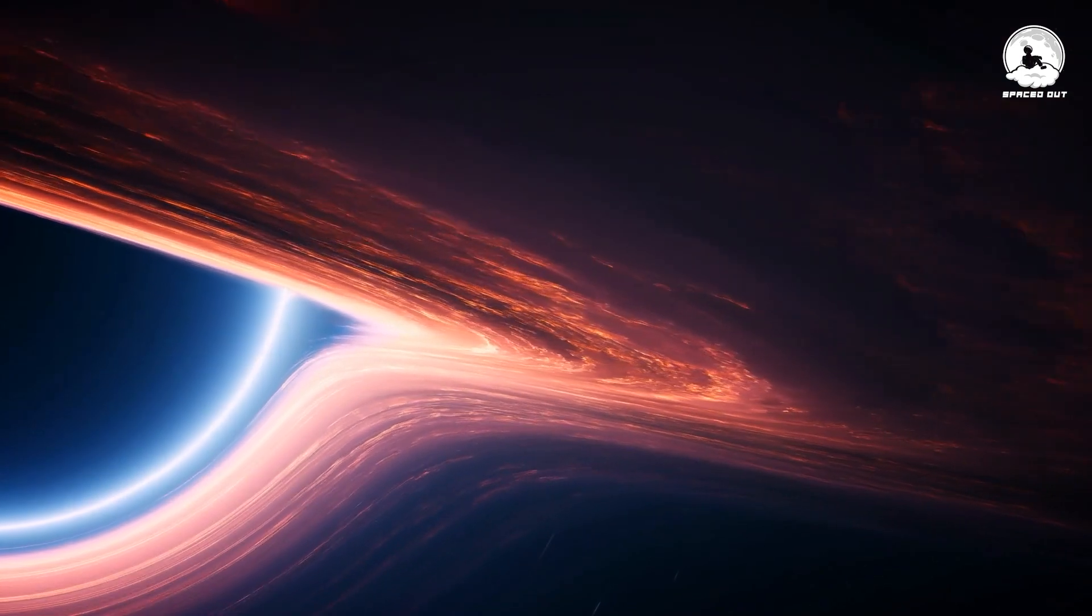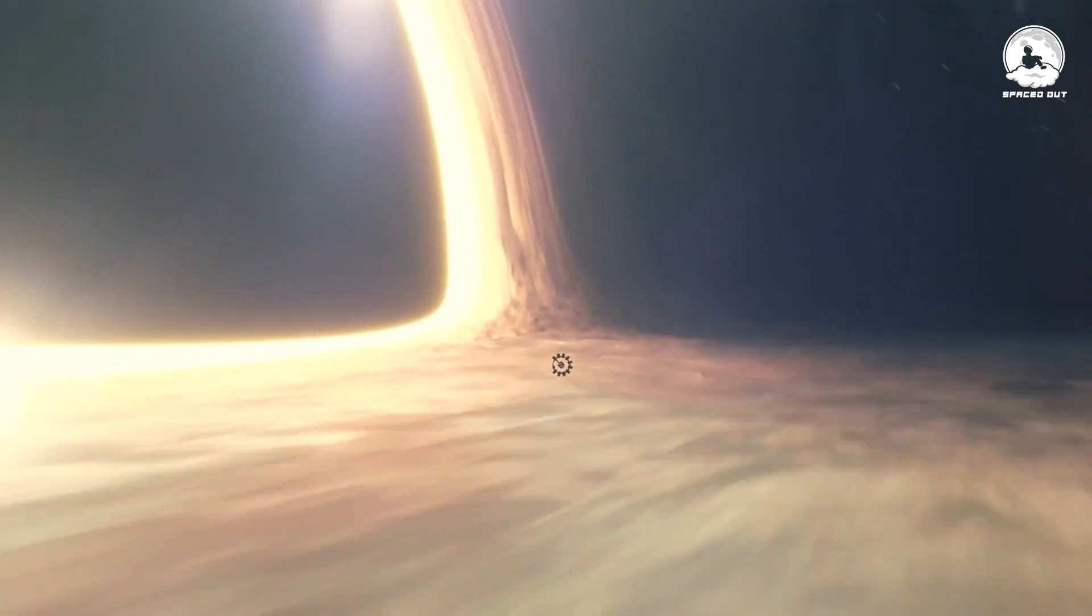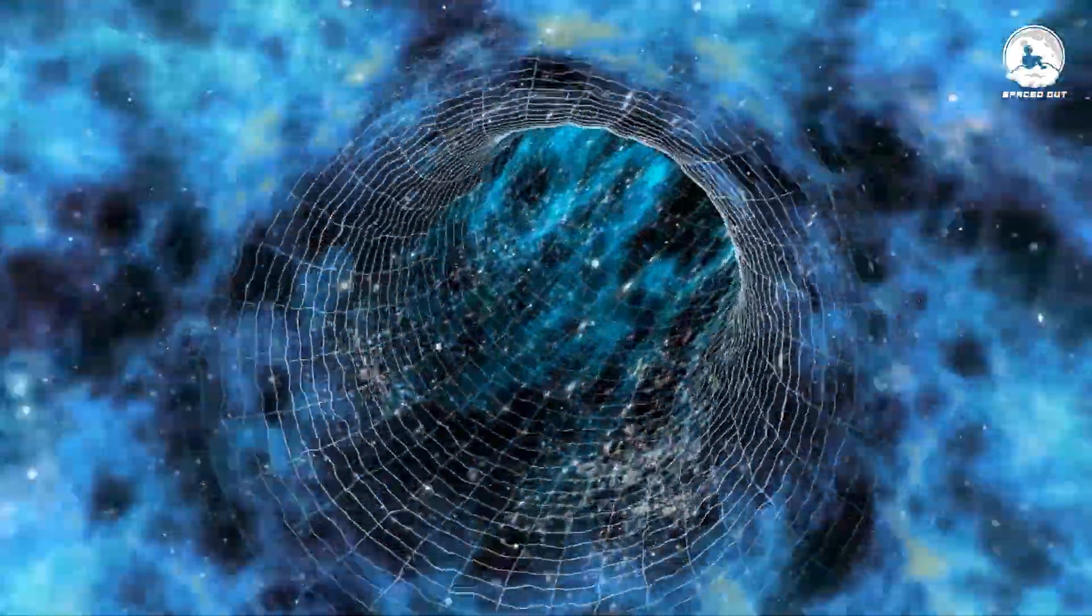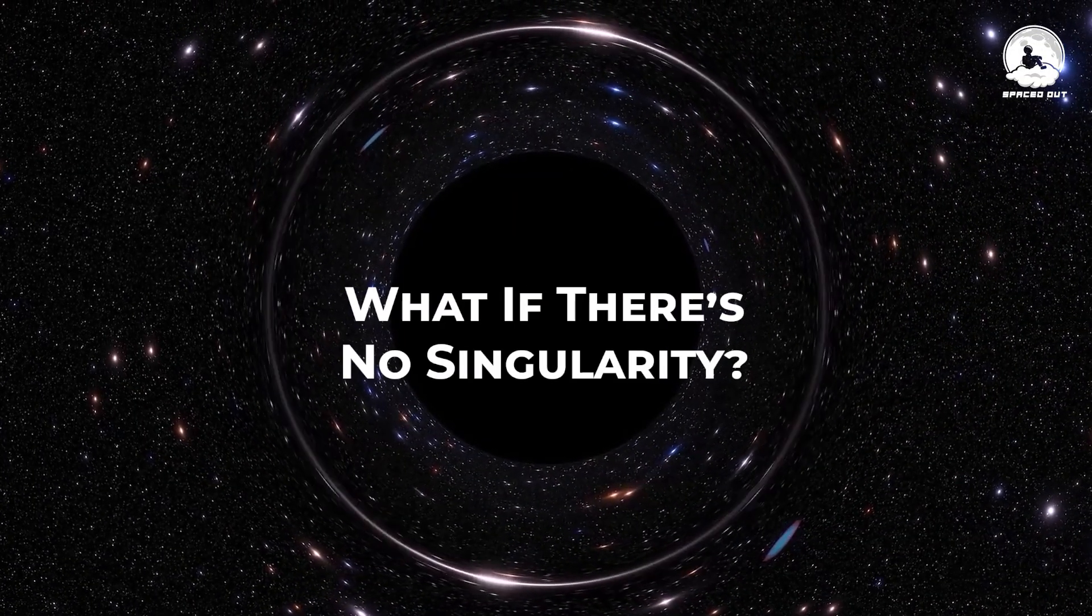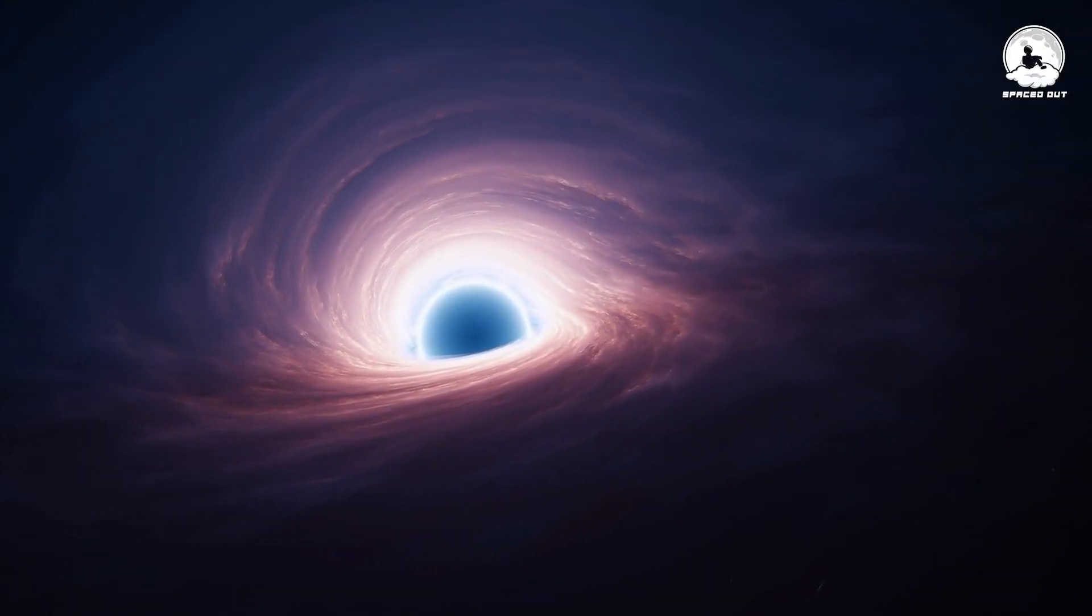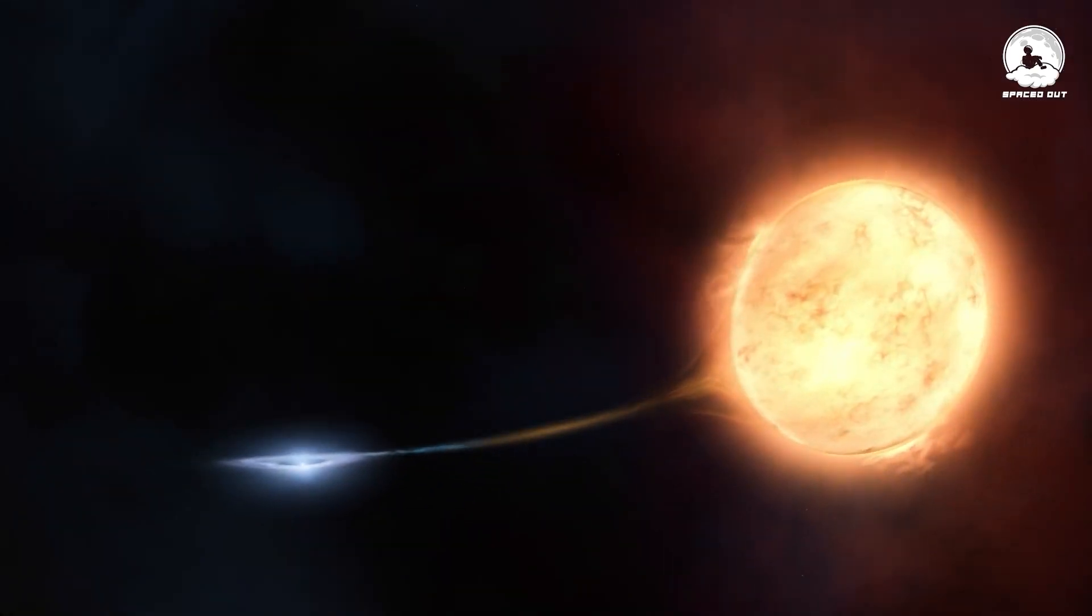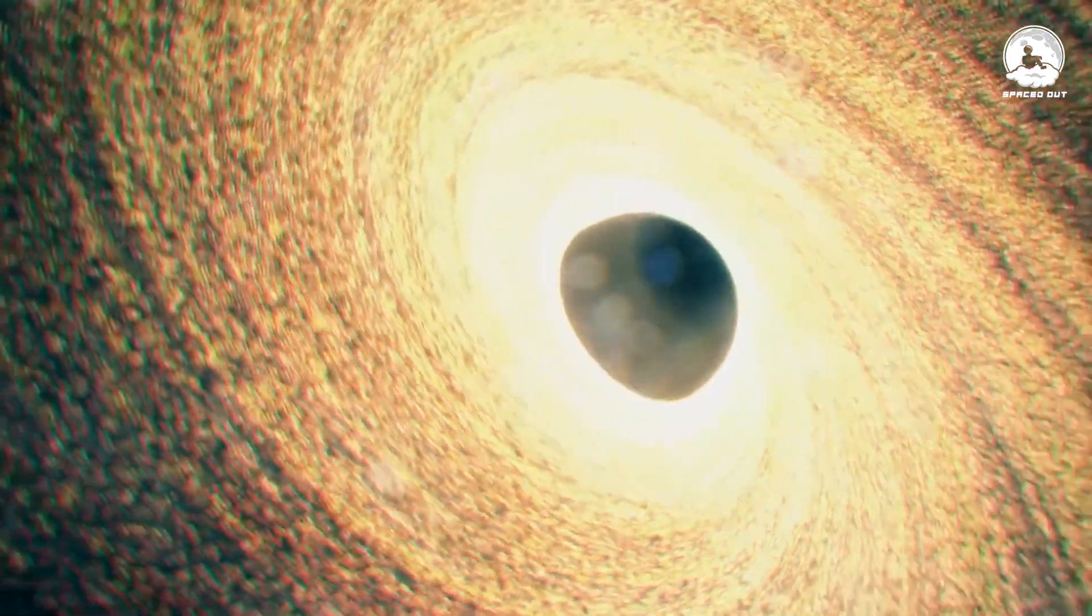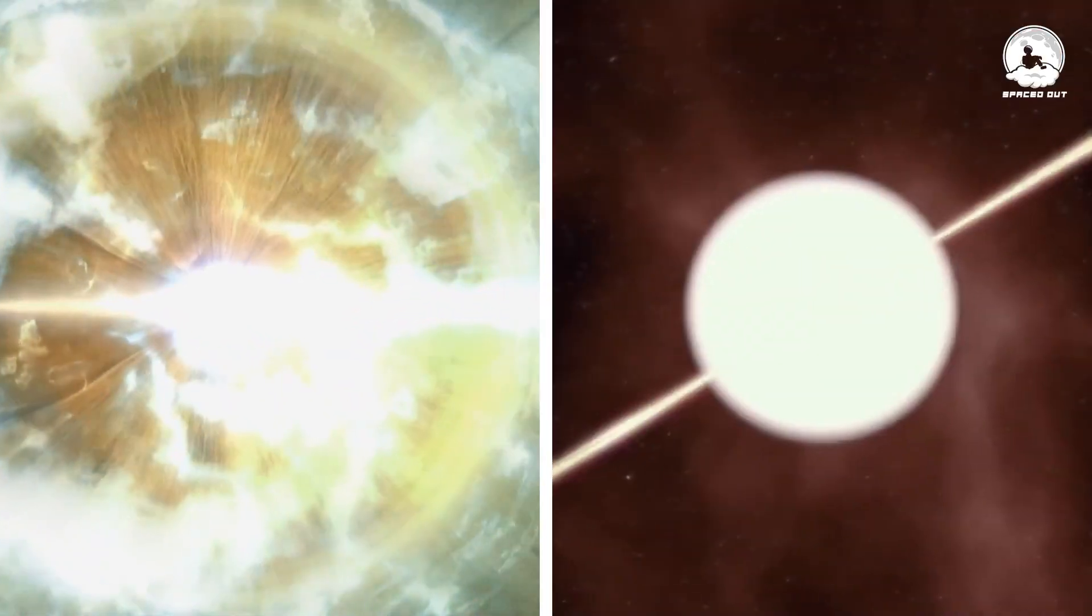This forms a one-way barrier, the event horizon, allowing entry but preventing anything from escaping, ultimately trapped at the singularity within. However, an intriguing possibility arises. What if there's no singularity? Instead, the other side of the event horizon resembles our universe, but is mirrored upside down, with time running backward. In our universe, matter falls into the black hole. But in the parallel universe, characterized by reversed time, the mirror black hole might be expelling matter, similar to a Big Bang. This intriguing concept is referred to as a white hole.